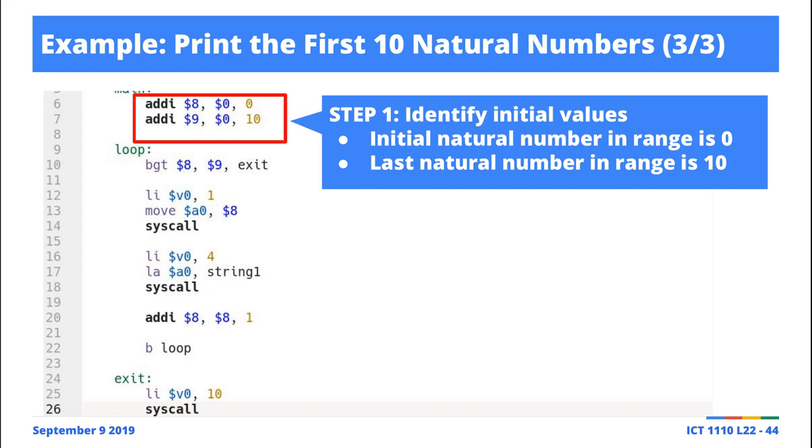Why 0? Because we know that we wish to start printing natural numbers from 0. Natural numbers start from 0, right? So 0, 1, 2, 3, 4, all the way up to 10.